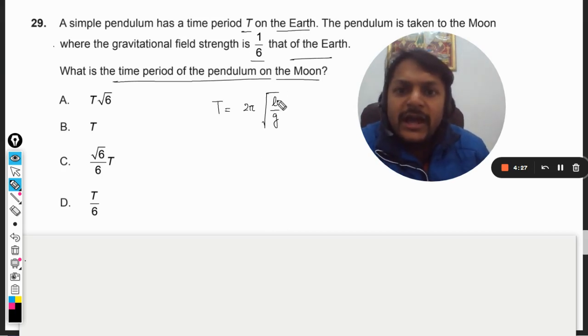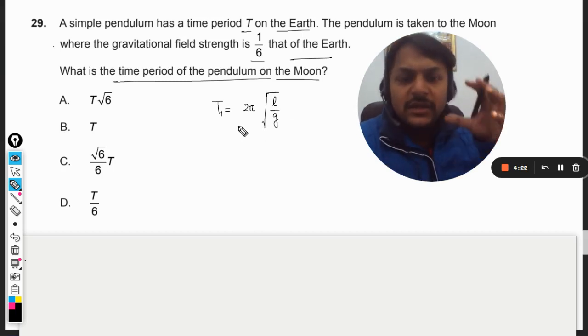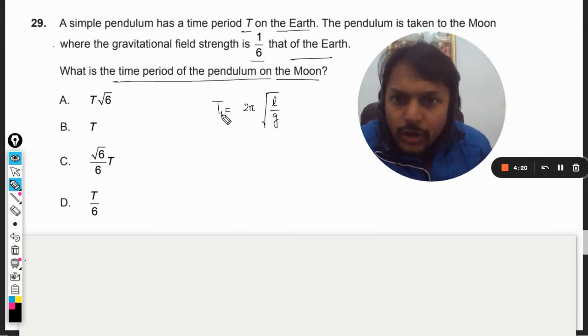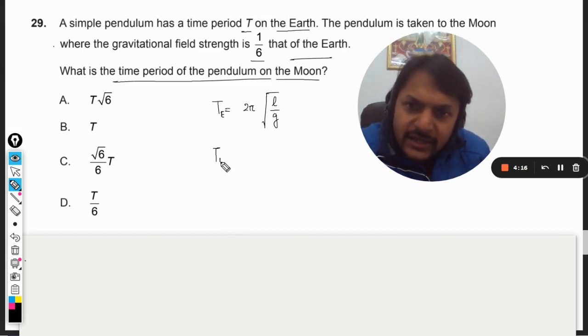Okay, I am just calling it T1 because it is the time period on Earth. And the time period on Moon will be 2π, and the length is not changed but the gravitation is changed. It is G by 6. So it means 6 will go into the numerator and overall only root 6 is multiplied.